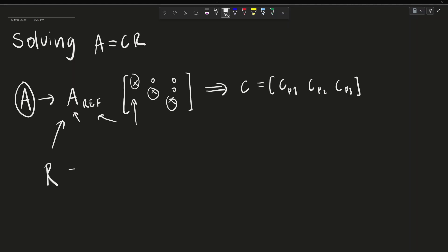So R is a matrix comprised of the rows in row echelon form that are non-zero. So this is row 1, which is non-zero, row 2, which is non-zero, for however many non-zero rows there are.